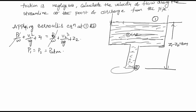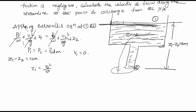Next, for v1 at section 1 — the fluid is at rest at the surface, so there is no velocity at the top. We can consider v1 = 0, so the term v1²/2g also cancels. The given height difference z1 minus z2 equals 10 meters. With v1 = 0 and the pressure terms cancelled, the equation simplifies to: z1 = v2²/2g + z2, so z1 minus z2 = v2²/2g.